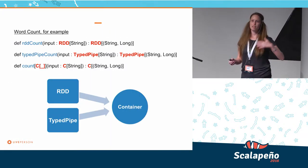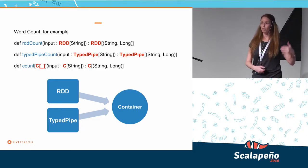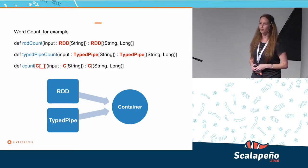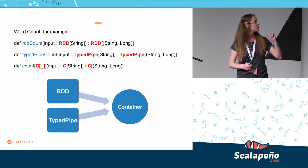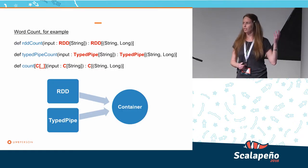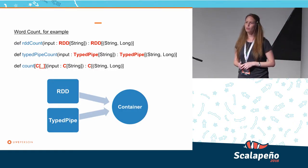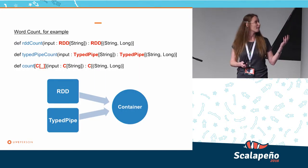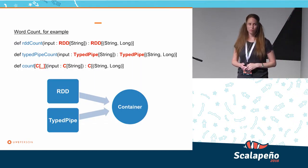So what I want to do is take RDD and TypedPipe, and instead of writing my whole functionality with them, use another structure called a container. Let's look at this example for word count. If we look at word count with RDD, we get input RDD and output is RDD, and same with TypedPipe. What I'd like to do is use instead some general container, so we get an input of container and output of container.